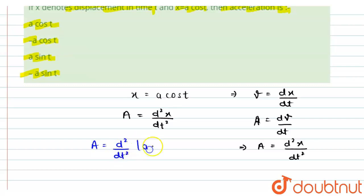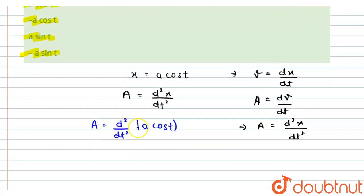As a is a constant, we can take it out, and the first differentiation of cos t would be minus sin t. So we will be left with d/dt of minus sin t.